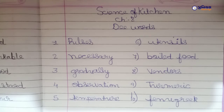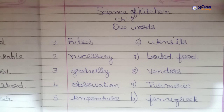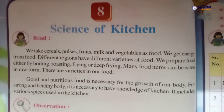Seventh one is Boiled food — spelled B-O-I-L-E-D F-O-O-D — which means Ubla huwa Khana. Eighth one is Vendors — spelled W-E-N-D-O-R-S — which means vendors. Chapter number eight: Science of Kitchen. Read.